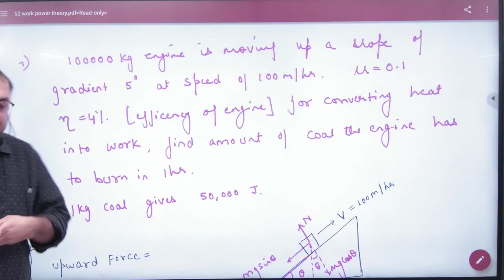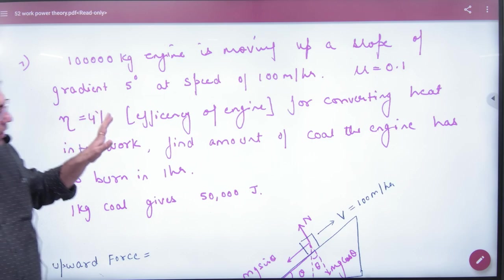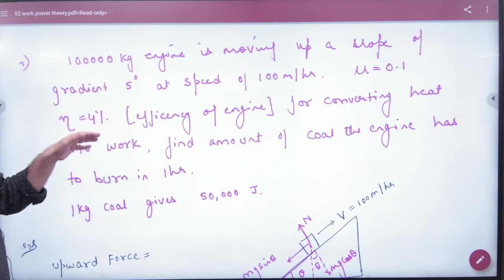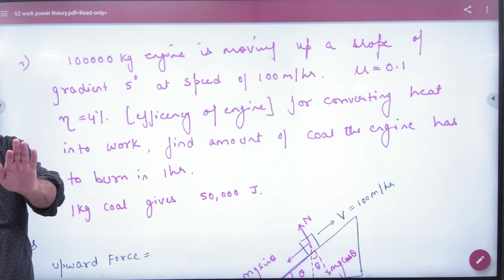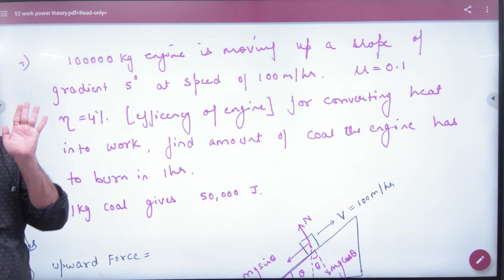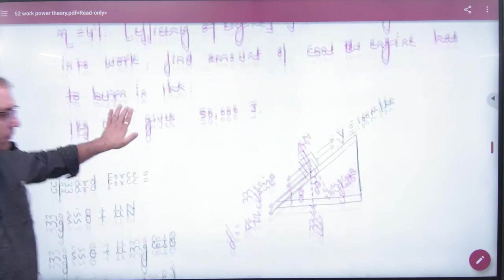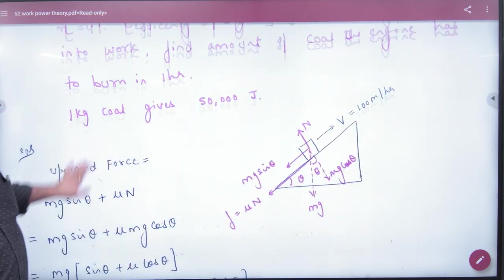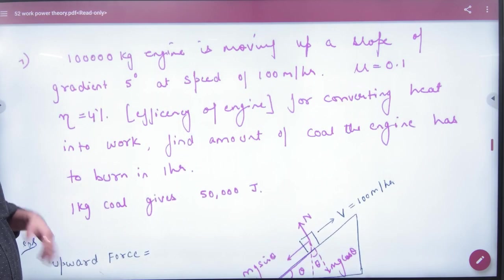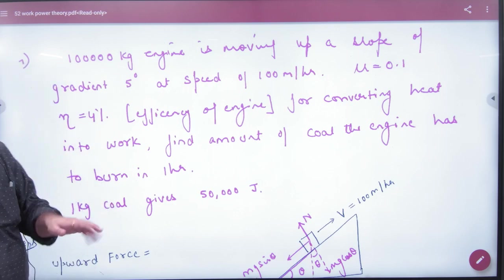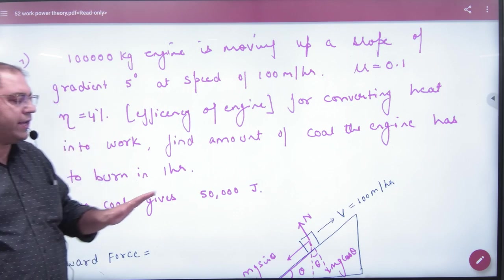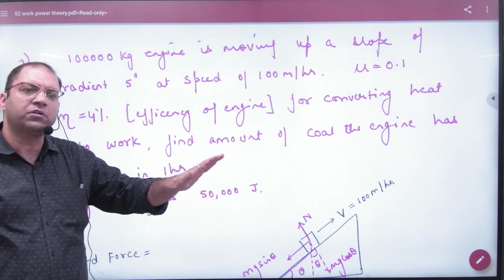A 100,000 kg engine is moving up a slope of 5 degree gradient at a speed of 100 meter per second. The 5 degree gradient means the inclined plane angle θ is 5 degrees, and we need to convert the engine's constant velocity.